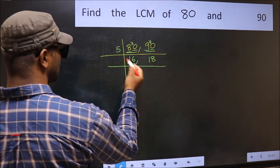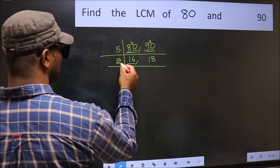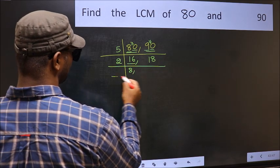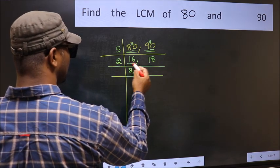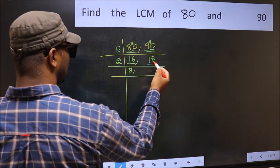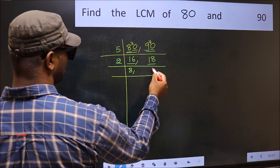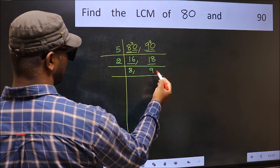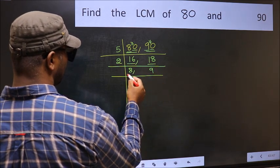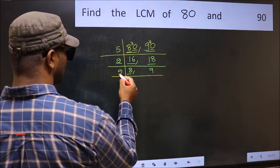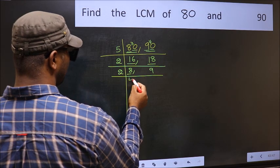Now we have 16 and 18. 16 in the 2 table: 2 times 8 is 16. The other number 18 — when do we get 18 in the 2 table? 2 times 9 is 18. Now we have 8 and 9. 8 in the 2 table: 2 times 4 is 8.